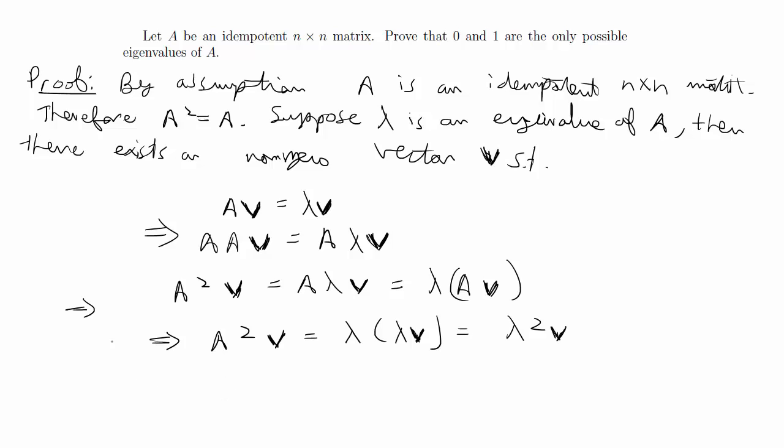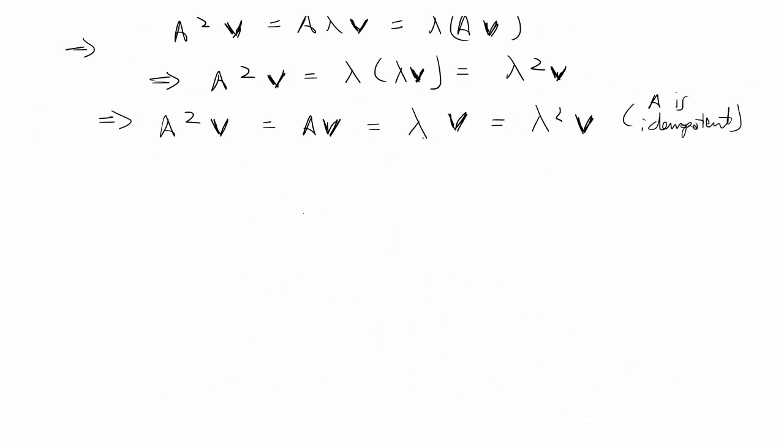We still have A squared V on the left-hand side, so A squared V is equivalent to AV. We know that, which is equal to lambda V, which is equal to lambda squared V. We can say that because of the property that A is idempotent. Then if we use this as the left-hand side and this as the right-hand side, we have an equation that we can solve.